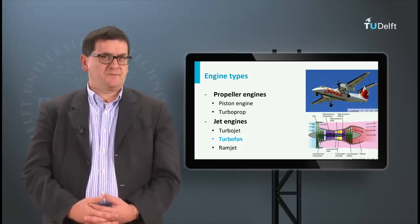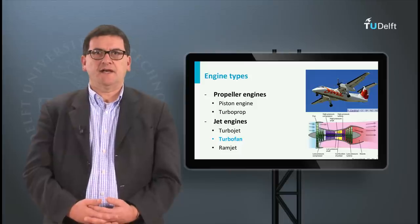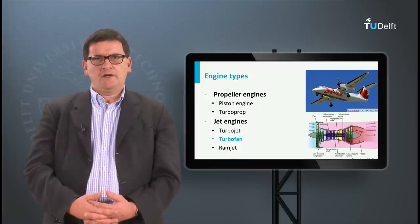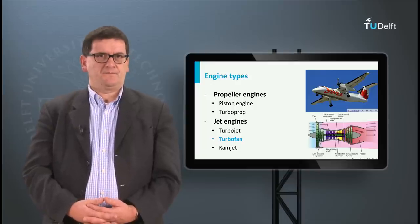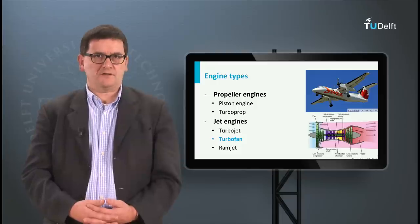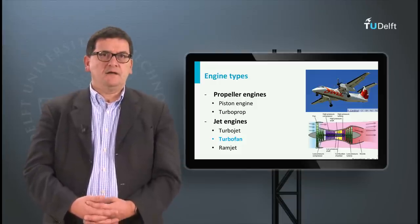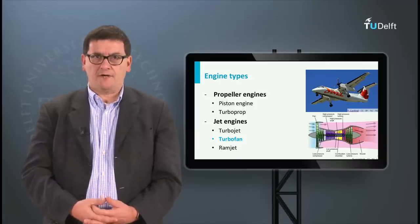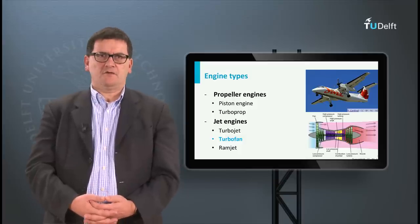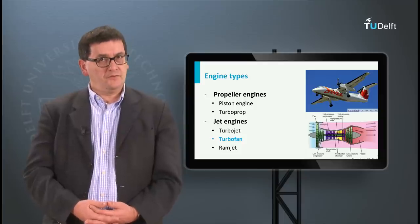The jet engine was invented just before the Second World War, but only after the war, in the early fifties, did it enter civil aviation. The most commonly used jet engine today is the turbofan. For this engine, only a portion of the air flows through the hot section including the combustion area. Most air is, after passing a large fan, bypassed.